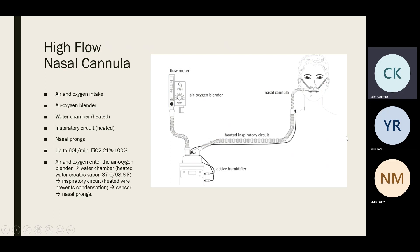Here's a diagram of the high flow nasal cannula system. The main parts are the flow meter, air-oxygen blender, humidifier, heated circuit, and the nasal cannula. What happens is: you have an air intake and oxygen intake, delivered to the air-oxygen blender. This blended oxygen, depending on your flow rate and FiO2 settings, is then delivered to a water chamber.